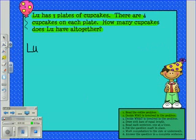Step three: Decide what is involved in the problem. So we'll add cupcakes. Remember to add the apostrophe S to Lou, showing that the cupcakes belong to Lou.